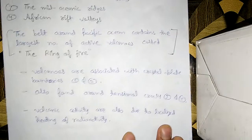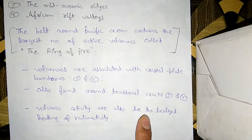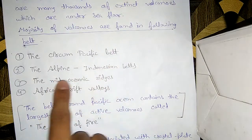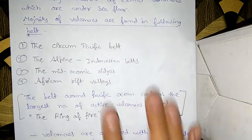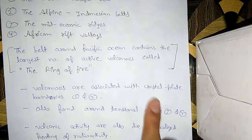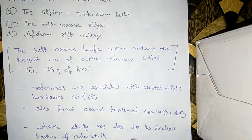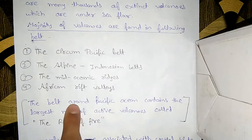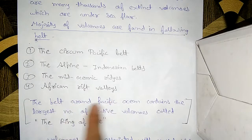Most volcanic and earthquake activities occur in the Ring of Fire. Volcanoes are associated with crustal plate boundaries. The first and second belts — the Circum-Pacific Belt and the Alpine-Indonesian Belt — are situated on crustal plate boundaries, meaning between the boundaries of two plates.